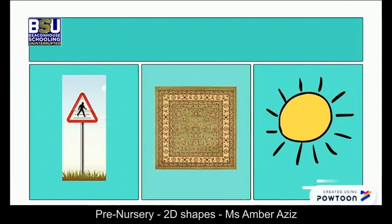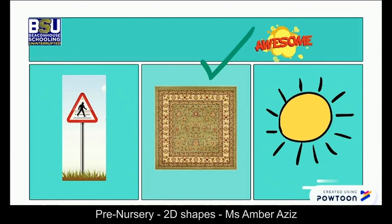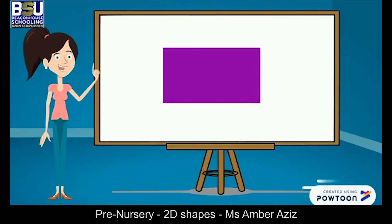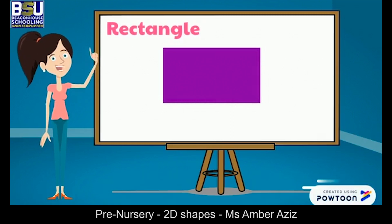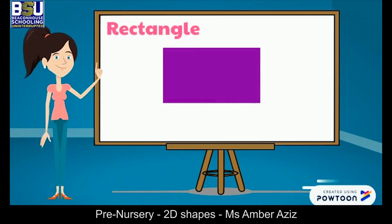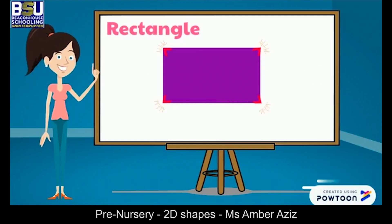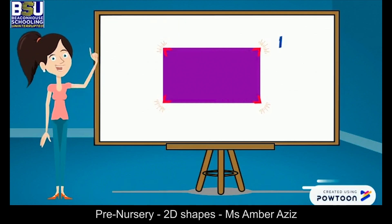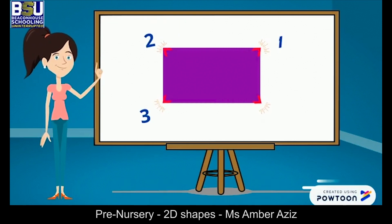Here are the objects for you — can you spot a square for me? Yes, this is a square-shaped carpet. This is a rectangle. It has four vertices and four sides. Let's count the vertices first: one, two, three, four.